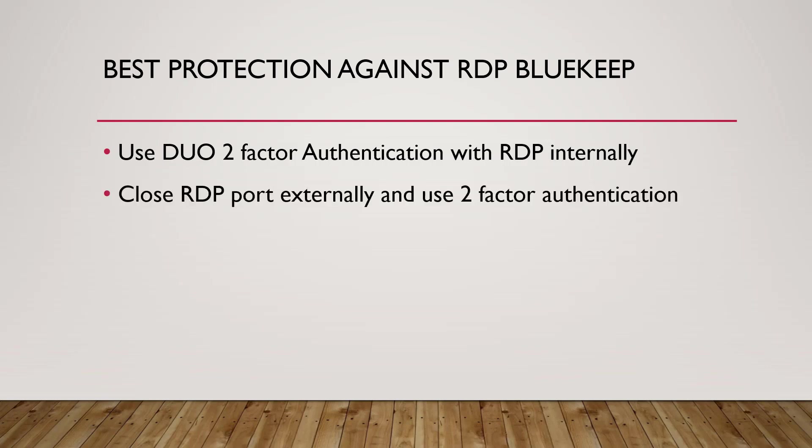Another approach is to close the remote desktop port externally and use two-factor authentication VPN instead. Rather than exposing RDP on port 3389 or any port in the 3000 to 5000 range, you close them all and use a 2FA VPN so you are virtually on the inside of your network, then connect to your remote desktop server from there. This helps from the outside, but you still want two-factor authentication on the inside as well.